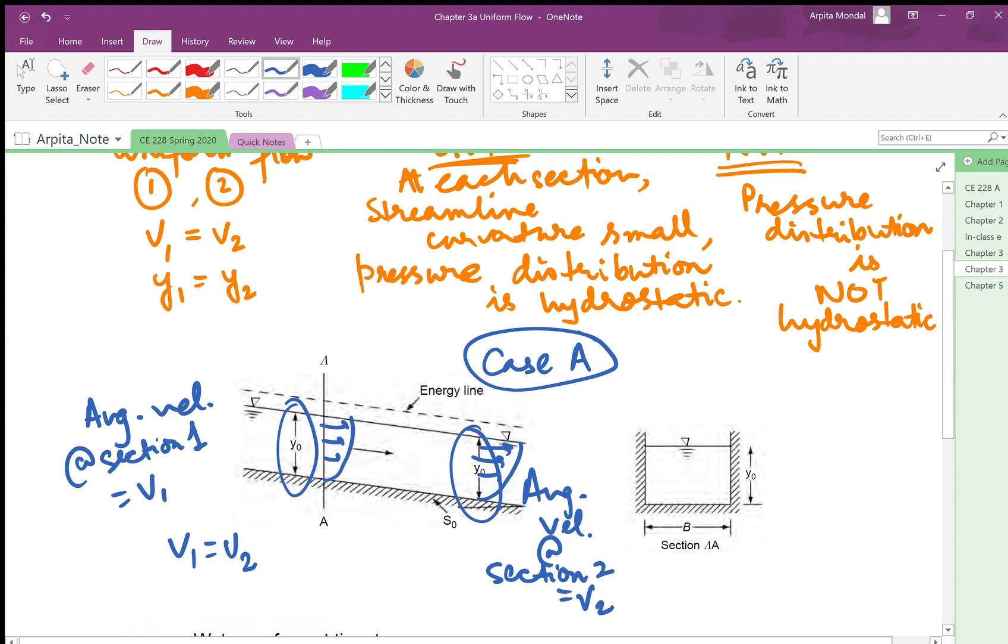And the primary requirement for this to happen is something called a prismatic channel, which means the cross section of the channel does not change as you move along the channel. So here we see a rectangular cross section with the depth of flow as y0, the bottom width is b, and here the wetted perimeter would be b plus 2 times y0.